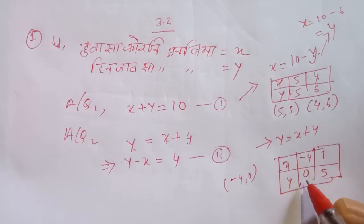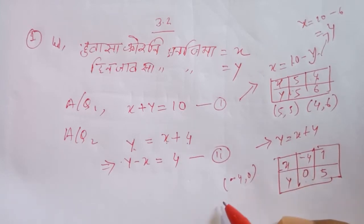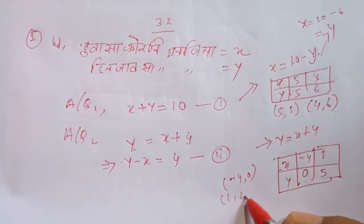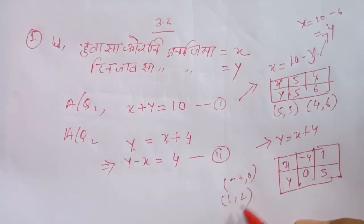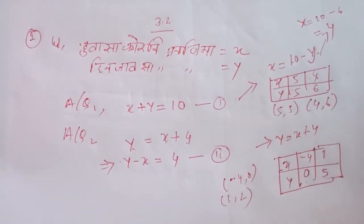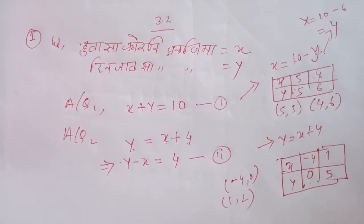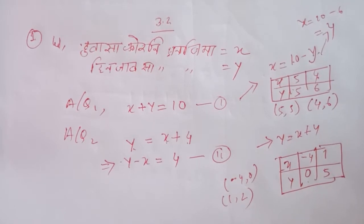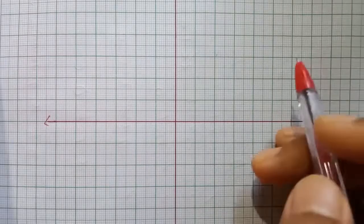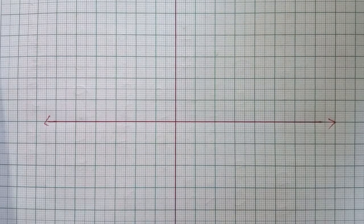You have to get x and y. This is 1 and 2 — the same thing. You have to get a graph. So, this graph is a graph.